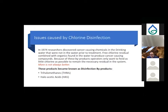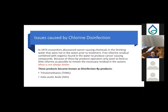In 1974, researchers discovered cancer-causing chemicals in drinking water that weren't present before chlorination began. Free chlorine residual was found to combine with naturally occurring organics in the water, producing cancer-causing compounds termed disinfection byproducts. Because of this, operators want to feed as little chlorine as necessary to maintain the residual — with chlorine, a little is good but more is not necessarily better.